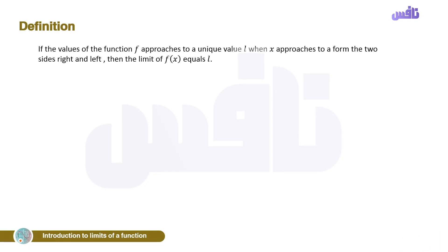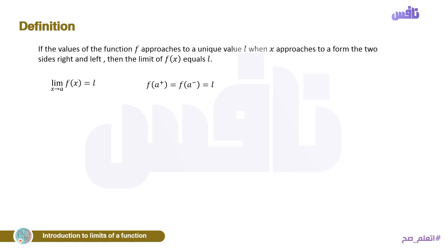Definition: If the values of the function f approach a unique value L when x approaches a from both sides — right and left — then the limit of f(x) equals L. If the right limit equals the left limit, both equal L, then the limit as x tends to a of f(x) equals L. So here, the limit as x tends to 1 of f(x) equals 2.